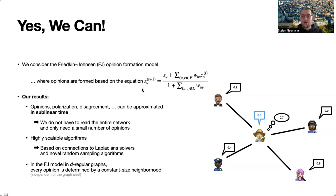From a more theoretical point of view, we show that if we consider the FJ model in d-regular graphs, then every opinion is determined by a constant size neighborhood. Interestingly, this is independent of the graph size and suggests that this opinion formation process in the FJ model is a highly local process.